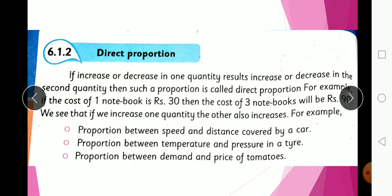If an increase or decrease in one quantity causes a corresponding increase or decrease in another quantity, such a proportion is called direct proportion. For example, if the cost of one notebook is Rs. 30, then the cost of three notebooks will be Rs. 90. As the number of notebooks increases, the price also increases. If it decreases, the price also decreases — this is called direct proportion.